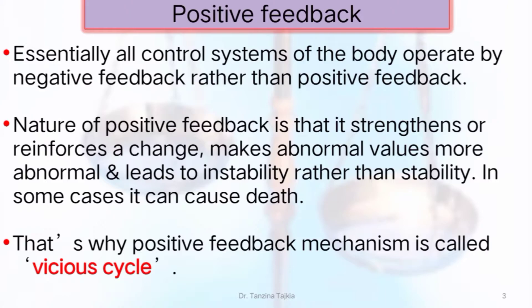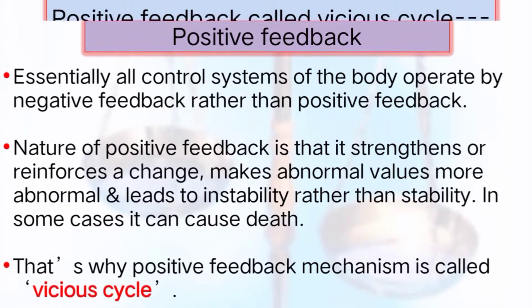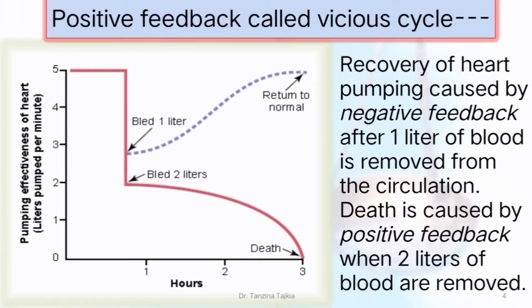In some cases, positive feedback can cause death — that's why it is called a vicious cycle. This figure, taken from the book written by Guyton, illustrates the positive feedback mechanism. It shows recovery of heart pumping caused by negative feedback after one liter of blood is removed from the circulation, versus death caused by positive feedback when two liters of blood are removed.